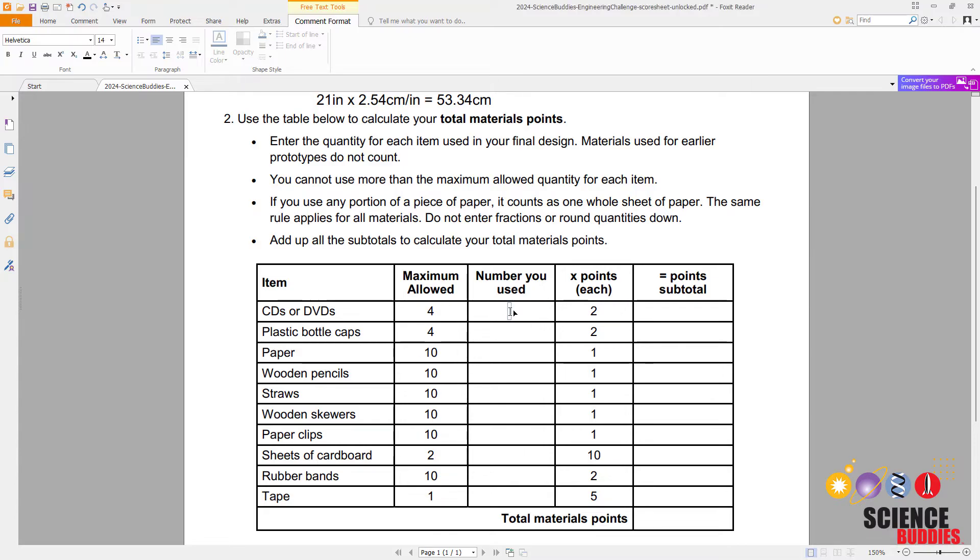So for our example car, I had four CDs, zero plastic bottle caps, no paper, four wooden pencils, two straws - remembering that even though I cut one straw it still counts as a whole straw, I do not calculate a fraction or a decimal, so I'm entering a two there because I used two whole straws to start - zero wooden skewers, one paper clip, one sheet of cardboard (again remembering that I round that up to a whole sheet even though I cut the sheet of cardboard), one rubber band and one roll of tape. Again, I do not need to measure how much tape I used. I used some tape so I'm just rounding that up to one complete roll.